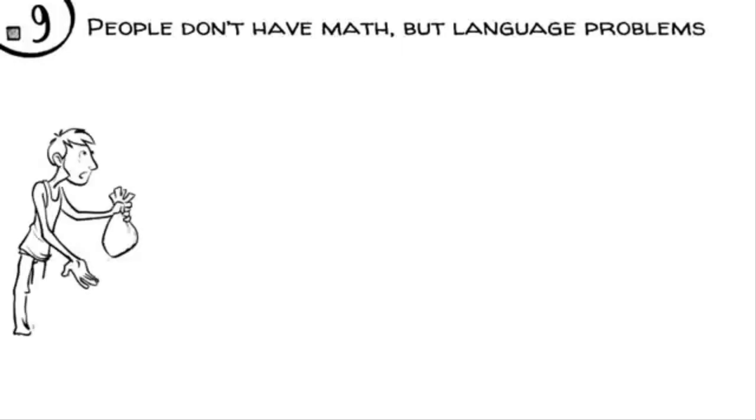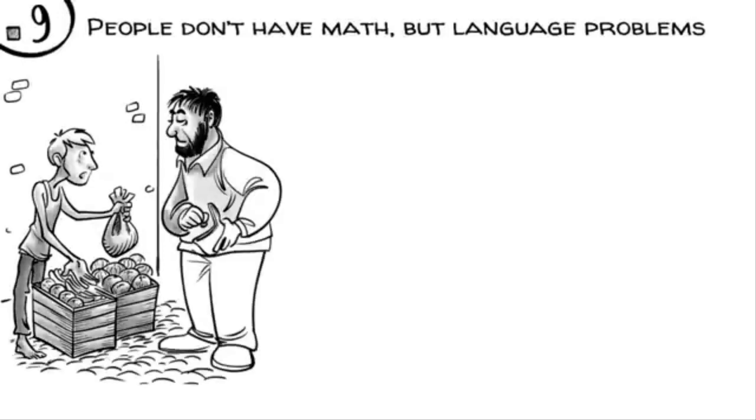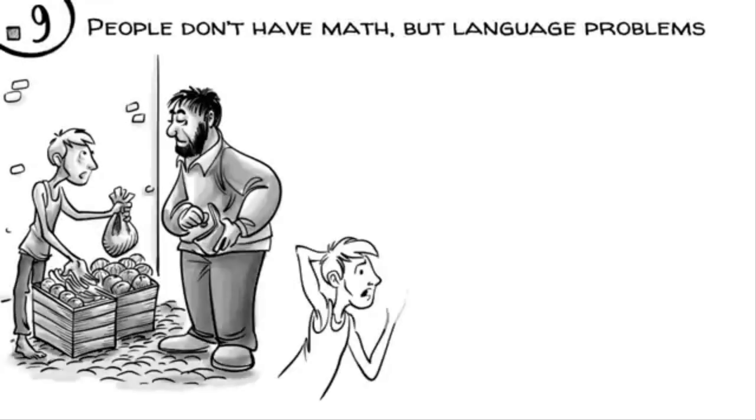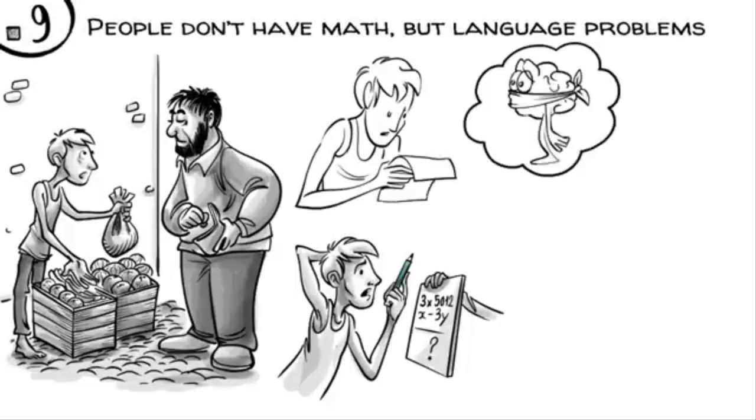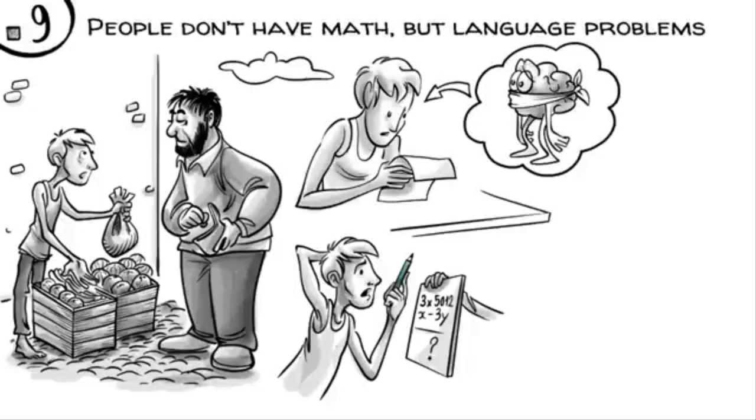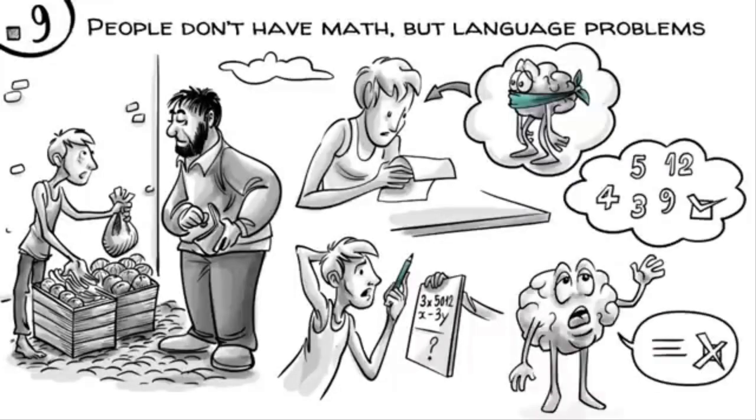Most people don't have math but language problems. We know, for example, that eleven-year-old unschooled street vendors are often highly proficient in complex money transactions but incapable of doing paper and pencil arithmetic. This phenomenon, known as street mathematics, shows that when smart kids struggle in school, they often just can't express their thinking in symbols. Their brains can do math but have language problems.